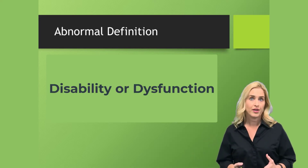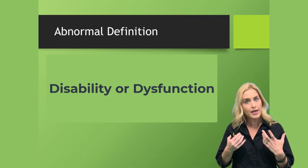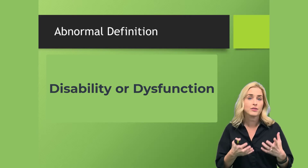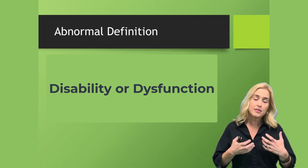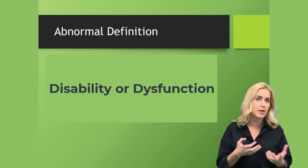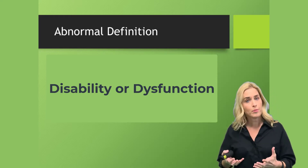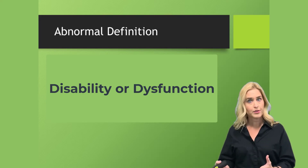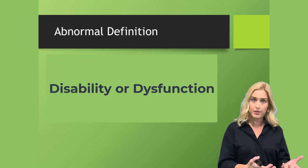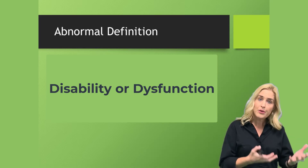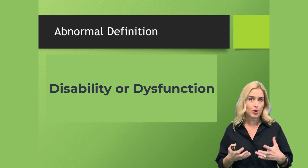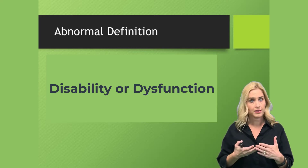The next criteria is disability or dysfunction. We look at this mental process and behavior in terms of how it impacts the person's life. Is this causing some type of distress or disability for them? Are they able to show up for work or class on time regularly as required? If not, what is the pattern and what might be happening with their mental process or behavior?